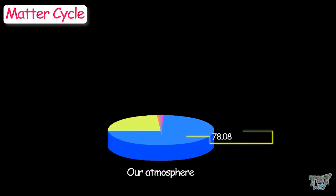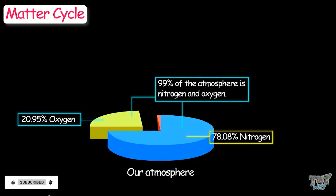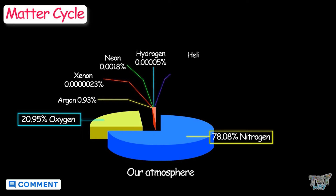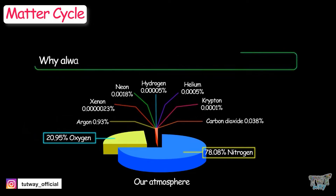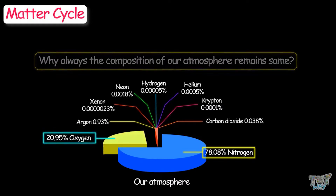We studied the composition of our atmosphere. It is 78.08% nitrogen and 20.95% oxygen — that is about 99% of the atmosphere. Only 1% constitutes all other gases, like argon, xenon, neon, hydrogen, helium, krypton, and carbon dioxide. And the composition never changes. Why does the composition of our atmosphere always remain the same? Why is it always 78.08% nitrogen? How is it always 20.95% oxygen?